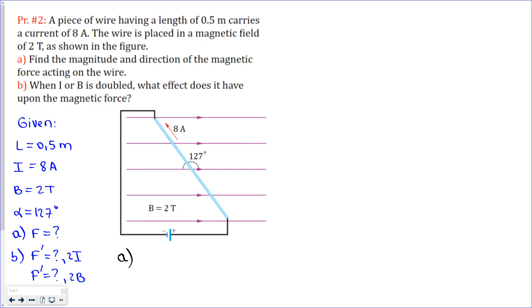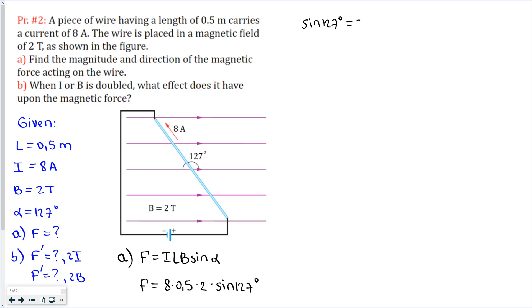Let's start with part A. We can find the magnitude of the force using this equation. Let's put the numbers from the given values into the equation: current is 8 amperes, length is 0.5 meters, magnetic field strength is 2 tesla, and sine 127°. From trigonometry, sine 127° equals sine 53° which equals 0.8. So force = 8 × 0.5 × 2 × 0.8, and the final answer is 6.4 newtons.